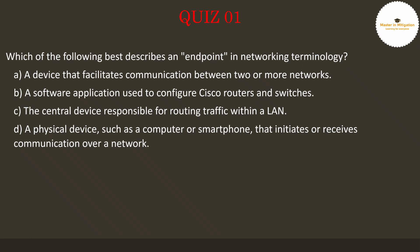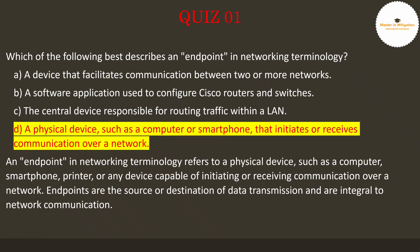Which of the following best describes an endpoint in networking terminology? Pause the video now to select the best answer. The answer is D — a physical device, such as a computer or smartphone, that initiates or receives communication over a network. An endpoint refers to a physical device such as a computer, smartphone, printer, or any device capable of initiating or receiving communication. Endpoints are the source or destination of data transmission and are integral to network communication.